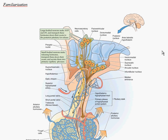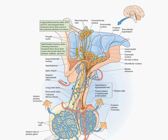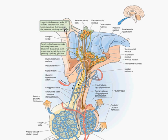Firstly, we'll start off by familiarizing yourself with the relevant anatomy. Looking at the brain here, there are a couple of important regions. Firstly, this is the hypothalamus and secondly this is the pituitary gland. The pituitary gland is made of two areas: the first is the anterior pituitary and the second is the posterior pituitary. The hypothalamus secretes releasing factors which act on either the anterior or posterior pituitary, causing a release of hormones into the body.